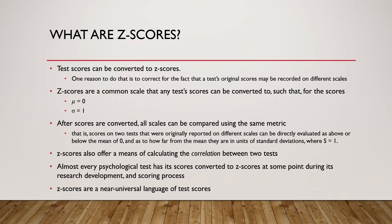Z-scores also offer a means of calculating the correlation between two tests. At one time or another, almost every psychological test has its original obtained scores converted to z-scores — that may be during the test's development, during research with the test, or during everyday use of the test. Z-scores are a near-universal language of test scores.